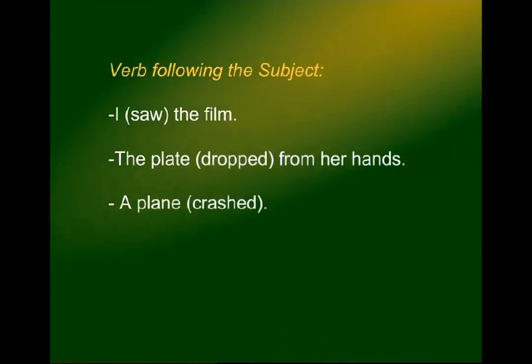In most English sentences the verb usually follows the subject. For example: 'I saw the film' — 'I' is the subject, 'saw' is the verb. 'The plate dropped from her hands' — 'plate' is the subject, 'dropped' is the verb. 'A plane crashed' — 'plane' is the subject, 'crashed' is the verb. But there are some sentences where the verb comes before the subject, and such sentences are often questions or begin with a prepositional phrase.